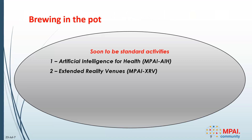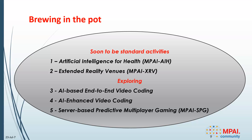We have two standards activities in progress. By the end of September, we should be able to issue two calls for technologies: one for artificial intelligence for health, and another for extended reality venues. We are also exploring two projects on video coding — one end-to-end and another AI-enhanced — and server-based predictive multiplayer gaming.